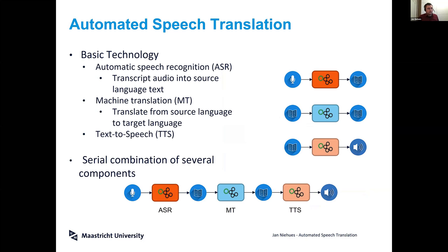Let's have a look at how this works and what the basic components are. For automatic speech translation, there are mainly three important components that we are using, where we can build on long-time research with a significant amount of work put in by many researchers.